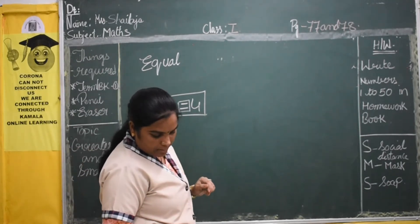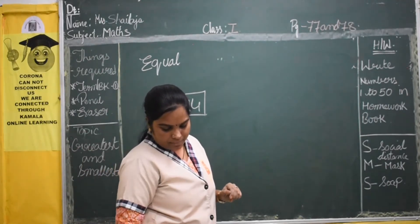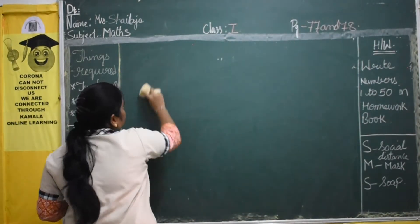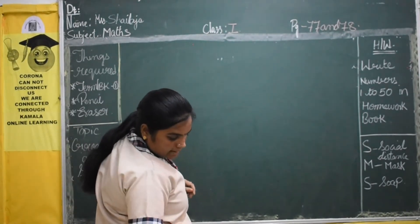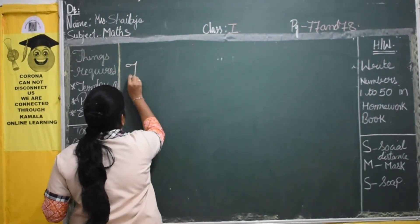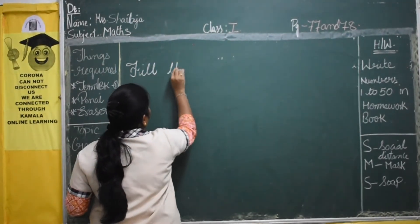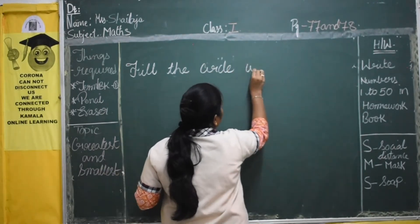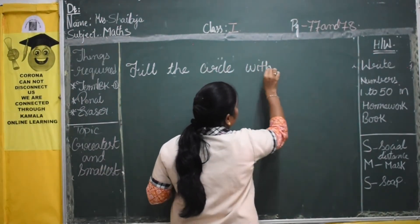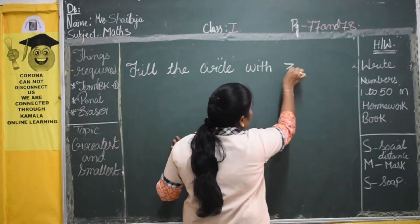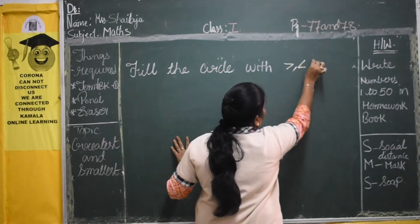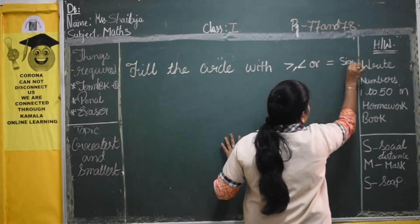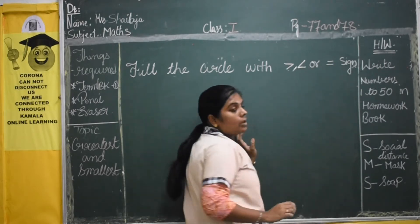Now shall we start the exercise? Open page number 78. Fill the circle with this symbol, this one, or is equals to sign. These are called signs.